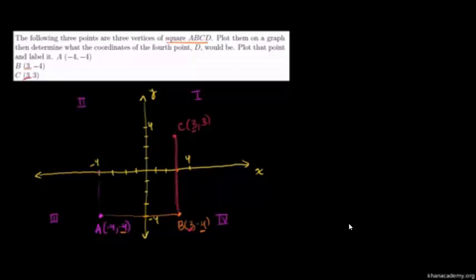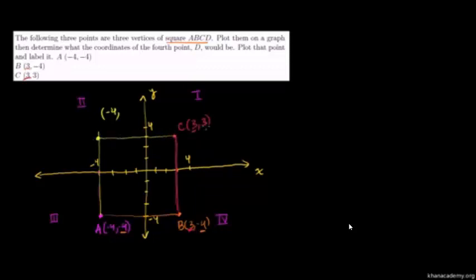Now we have to figure out the last point. Point D is going to have to be on the same vertical as point A — so it will have the same x-value of negative 4. And it's going to have to be on the same horizontal as point C — so it will have the same y-value of 3. So point D is at (negative 4, 3): it's right above A at x equals negative 4, and right to the left of point C at y equals 3. And we are done.